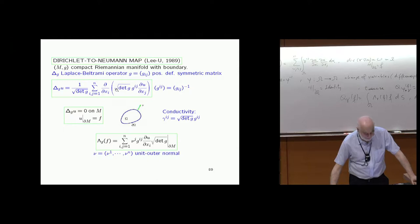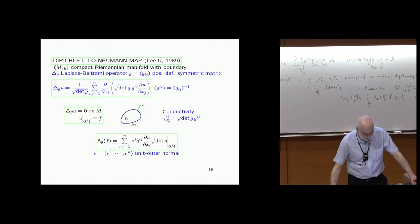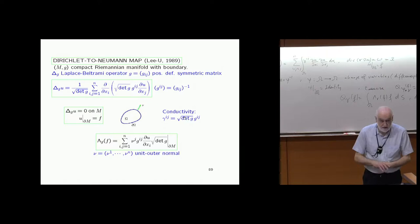The Laplace-Beltrami operator will appear a lot in invisibility. The conductivity gamma_ij equals the square root of the determinant of G times G^{ij}, where G^{ij} is the inverse of the metric G. So you can think of conductivities or metrics — they are equivalent in dimension three or higher.